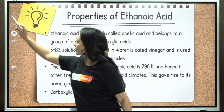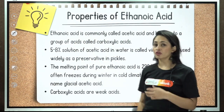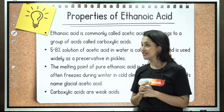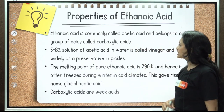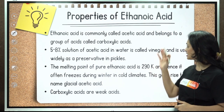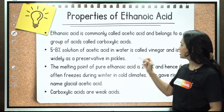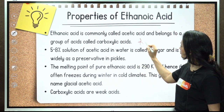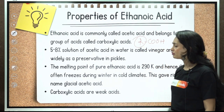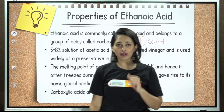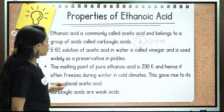Moving on to the properties of ethanoic acid. Ethanoic acid is commonly called acetic acid — that is its common name. It belongs to a group of acids called carboxylic acids. The general formula of a carboxylic acid is R-COOH, where R is any hydrocarbon group.